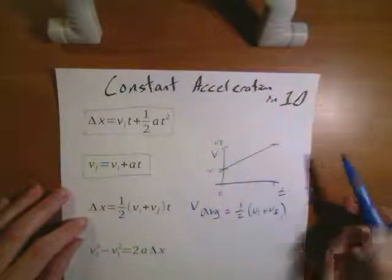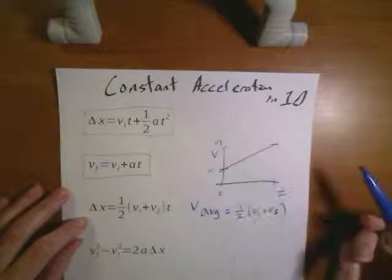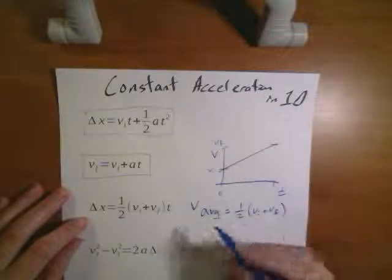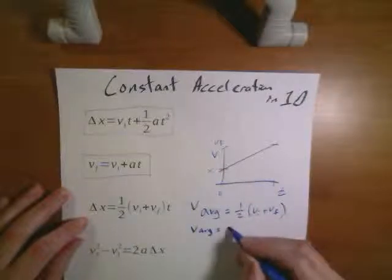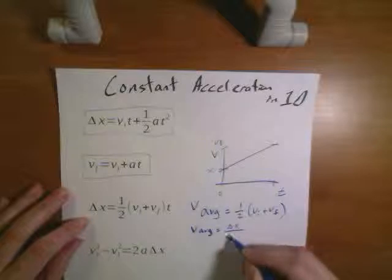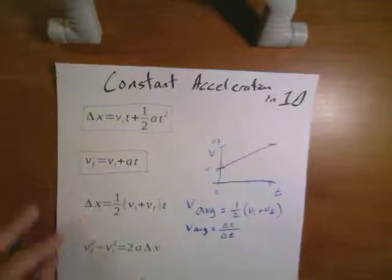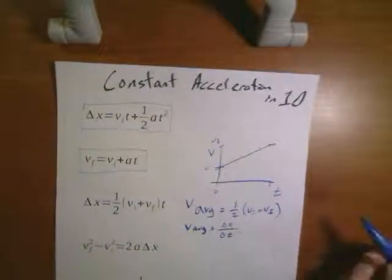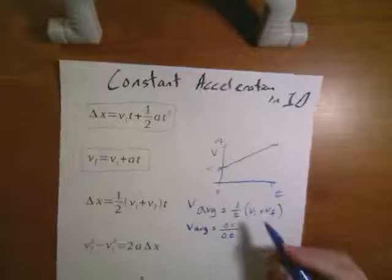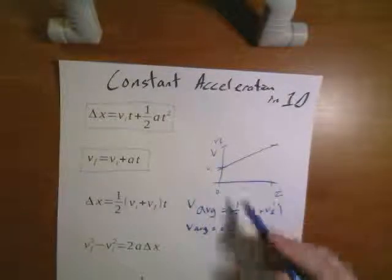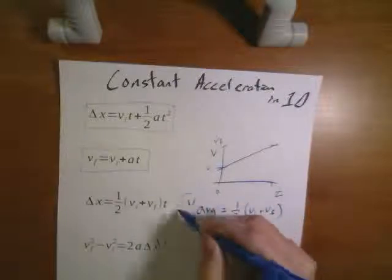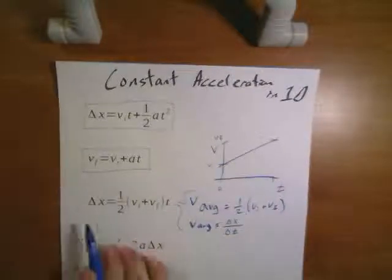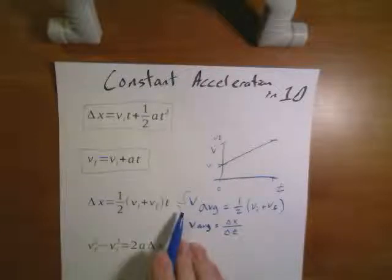Since it's a straight line, the average is going to be right in the middle of that. We can also use our equation that the average velocity is the displacement over a range of time. Combining these two equations, and recognizing that our delta t is really just t because our other value is zero, those combine to give us one of our commonly used equations of motion for constant acceleration.